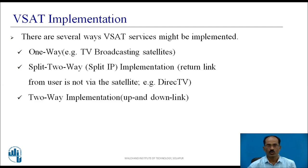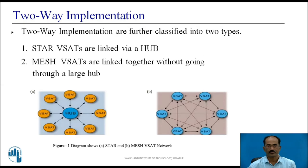The third type is two-way implementation, which covers both uplink and downlink through the satellite. For uplink: Earth station to satellite. For downlink: satellite to the Earth station. In this video, I am going to discuss only the two-way implementation.